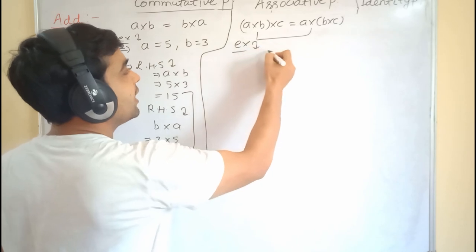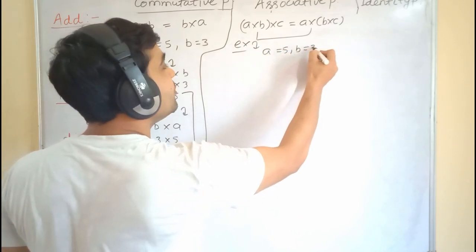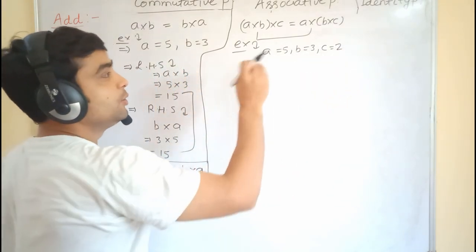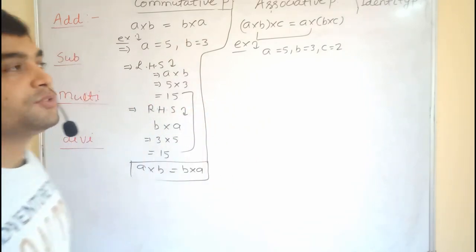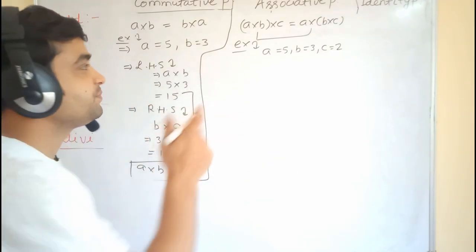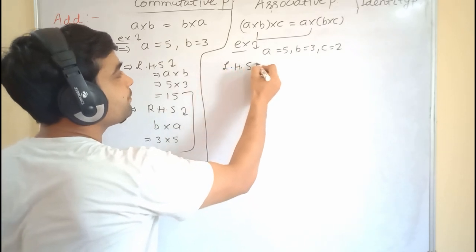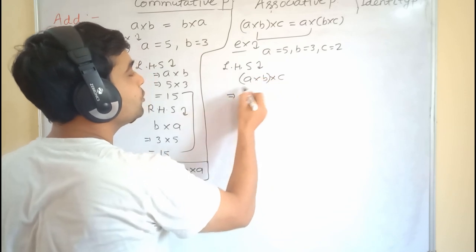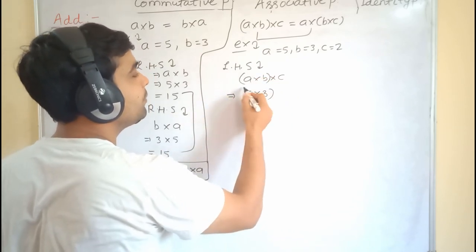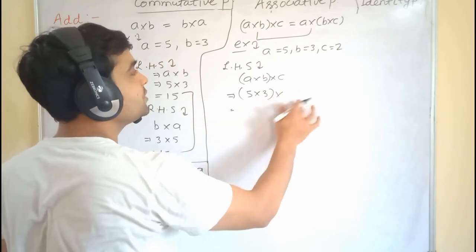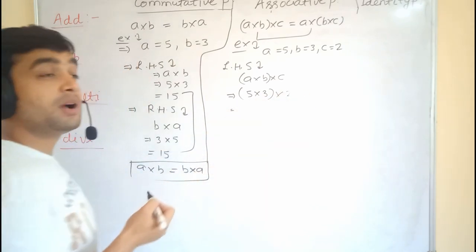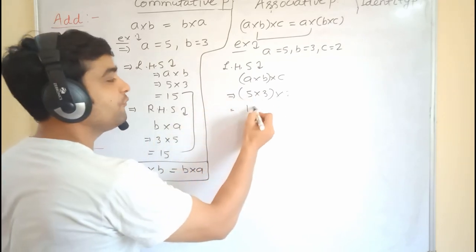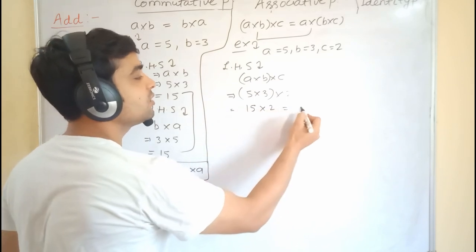We take a is equal to 5, b is equal to 3, c is equal to 2. For LHS, we calculate (a into b) into c, which is (5 into 3) into 2. According to BODMAS rule, we solve the bracket first: 5 threes are 15, then 15 into 2 gives 30.